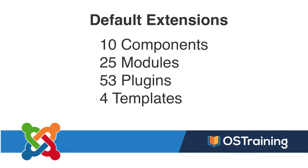Joomla comes with a whole bunch of extensions: 10 components, 25 modules, 53 plugins, and 4 templates. Don't worry — you don't have to know how all of those function in order to get Joomla working. Most of them just quietly sit in the background and work for you. We're going to go through each one in the upcoming videos, and in the next video we're going to talk about the components that come with Joomla.